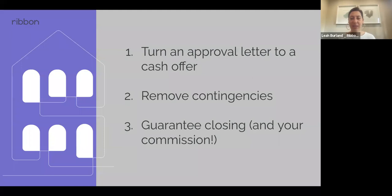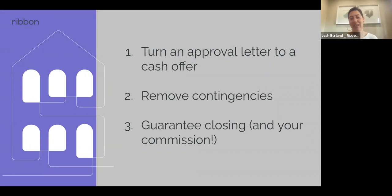We're also removing the home sale contingency — if the buyer has a home to sell and it doesn't sell in time, Ribbon will still purchase the new home for them. A huge one right now is that we're also removing the appraisal contingency. We back the offer with our cash and offer appraisal protection, so we are not requiring an appraisal to purchase, removing that contingency as well.